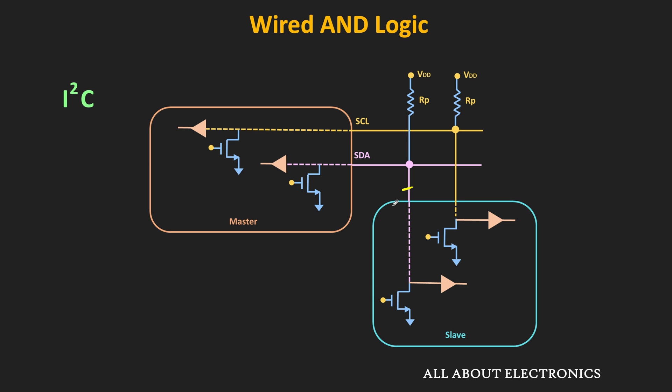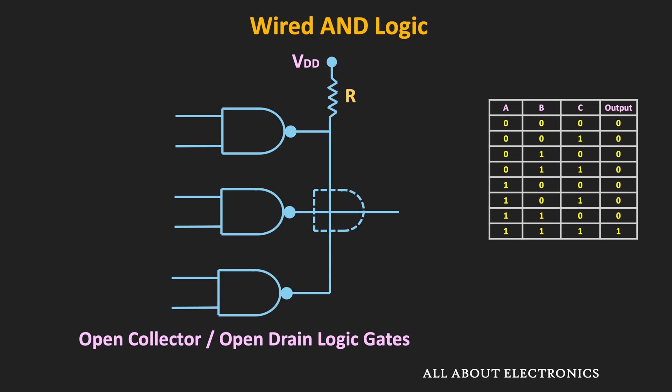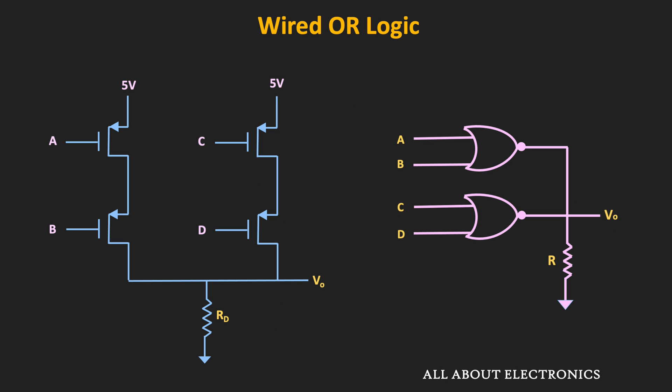That covers wired AND logic. To summarize: in open drain or open collector logic gates, using pull-up resistors, it is possible to implement the wired AND logic. Similarly, if we implement logic gates using open drain PMOS transistors or diodes, then using pull-down resistors, it is possible to implement a wired OR connection — which will be covered with an example in another video, with the link added in the description.